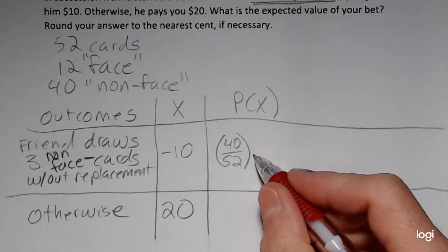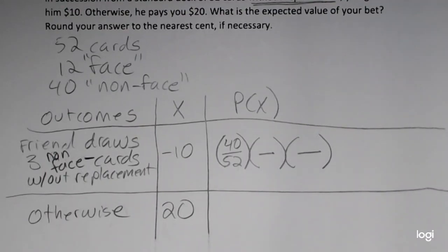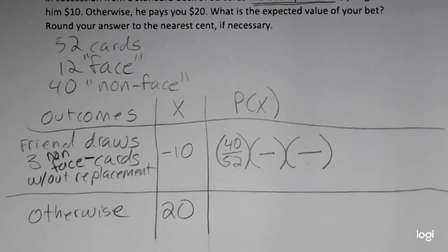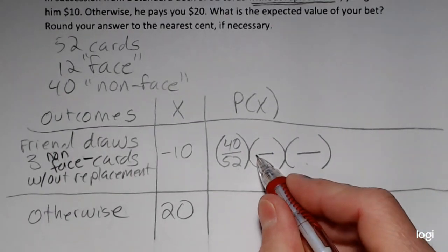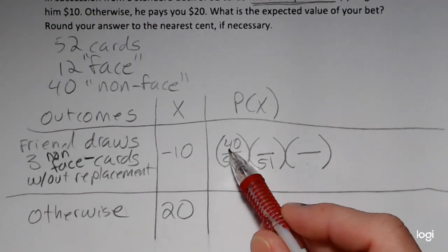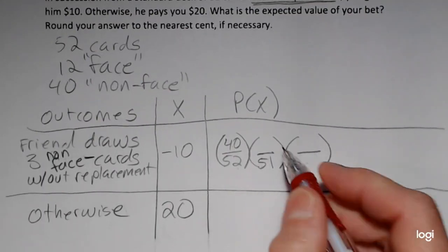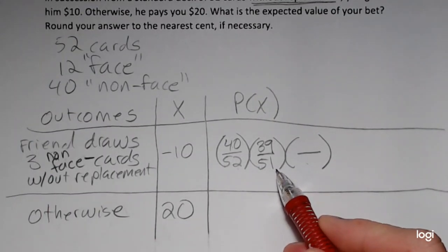But that's for the first draw. I have two more draws because we are drawing three cards. Now, here's where the without replacement is important. If the card is being put back, then we have with replacement, and there is no change in the denominator. But because we are sampling without replacement, after the first draw, 51 cards are left. And because we are looking for face cards, and the first card was a face card, again, without replacement, I have 39 left for the second draw. So the probability that we get a non-face card on the second draw, given that the first card was a non-face card, is 39 out of 51.